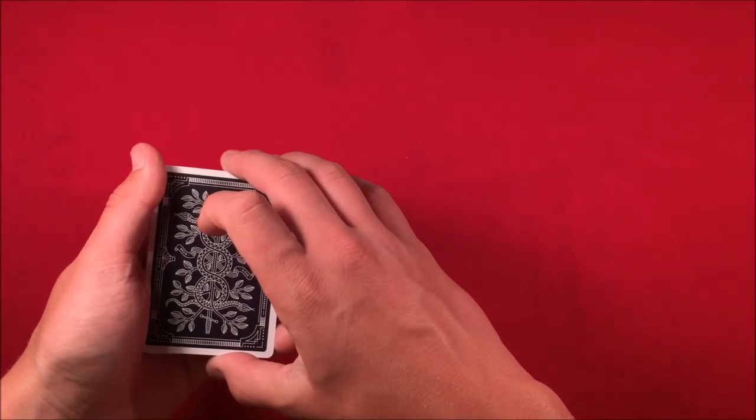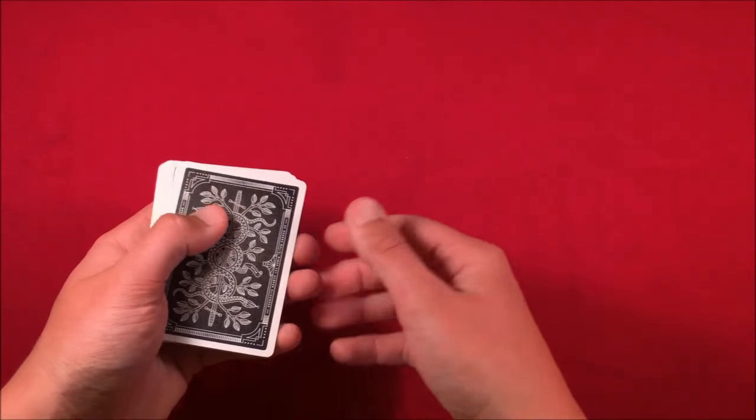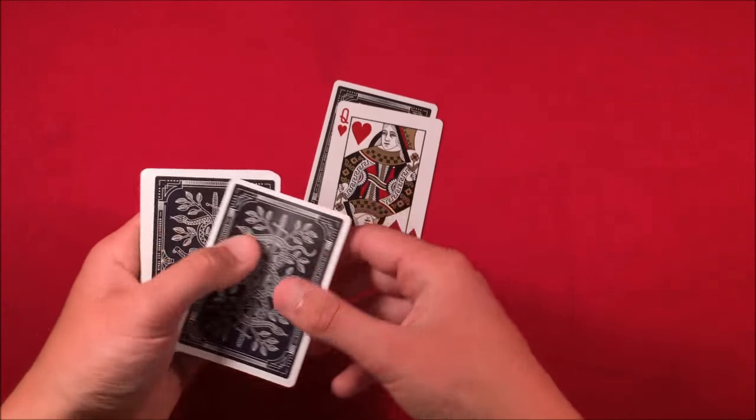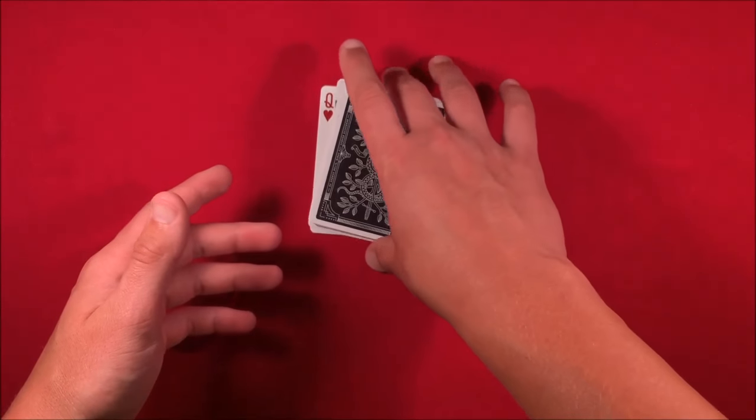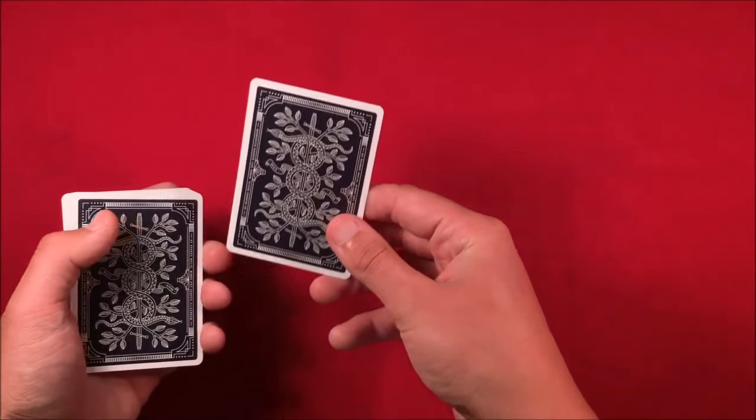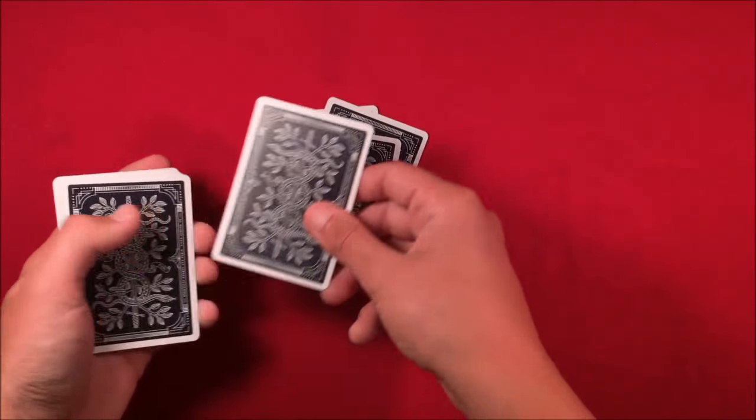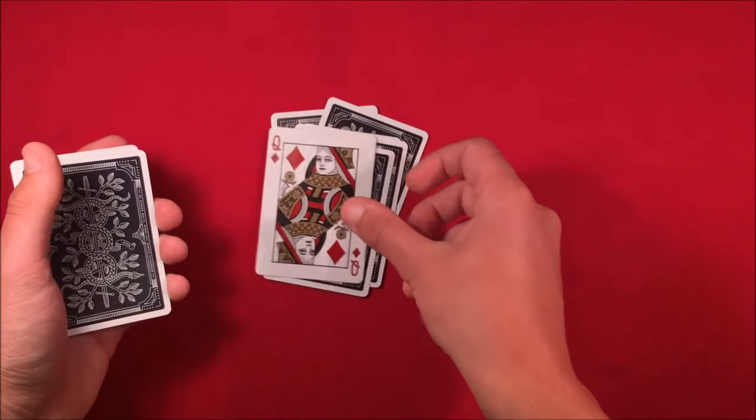When you spell RED, a queen should be where the E is - R-E-D. If a queen's in the middle when you spell red, you're on the right track. All you have to do is spell QUEEN - Q-U-E-E-N-S.